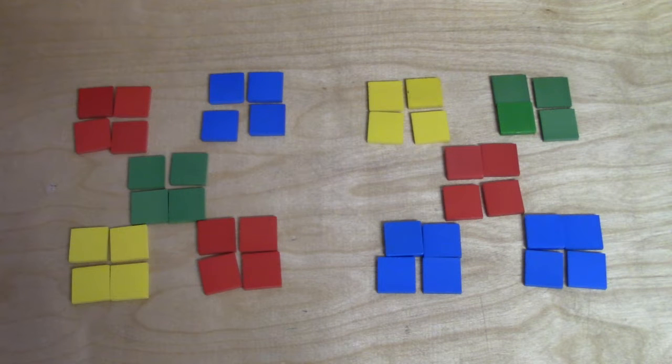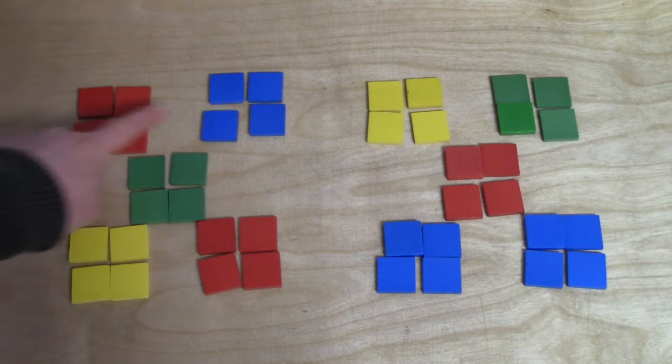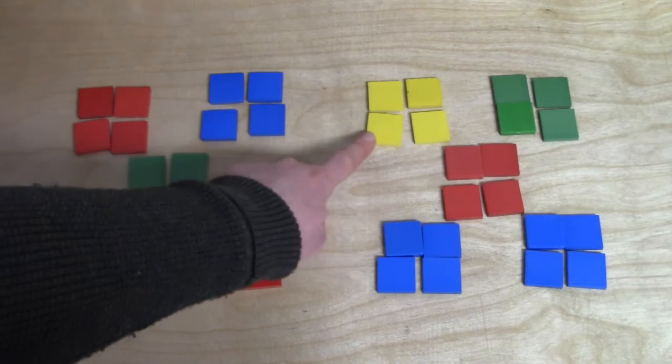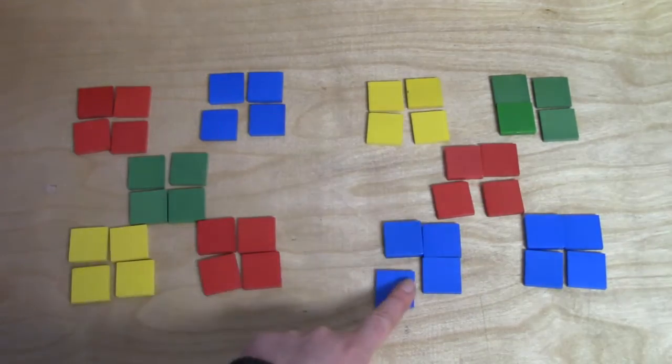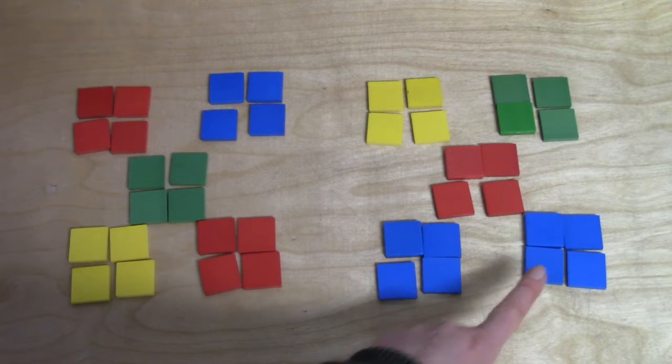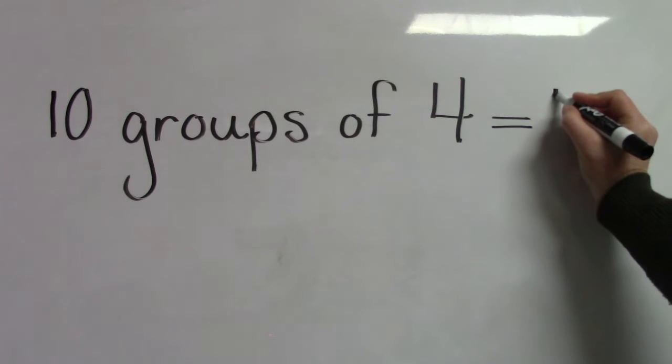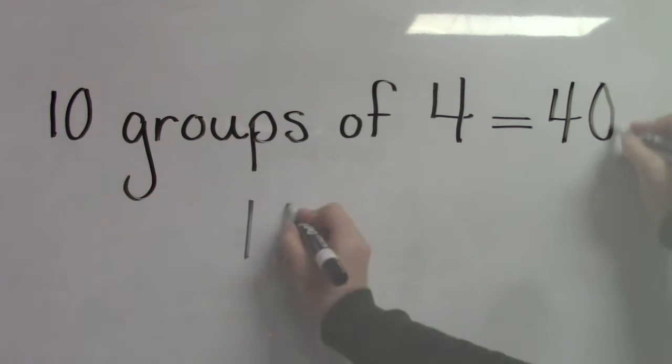Let's do it with our song. 4, 8, 12, 16, 20, 24, 28, 32, 36, 40. 10 groups of four equals 40.